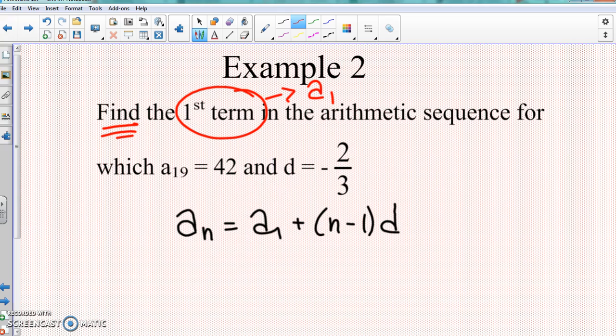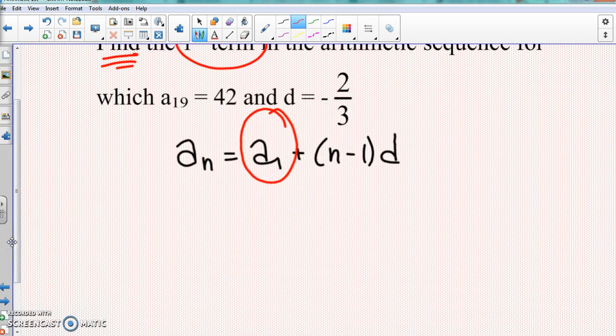So that means a₁ for this part right here, we don't know what that is yet, so we leave that alone. We don't touch that, so it means everything else should be given to us. We should have aₙ already, we should have what d is. So let's take a look at what they did give us though.